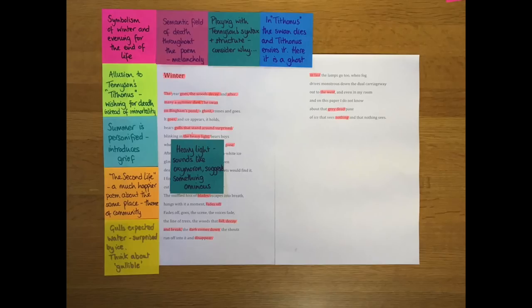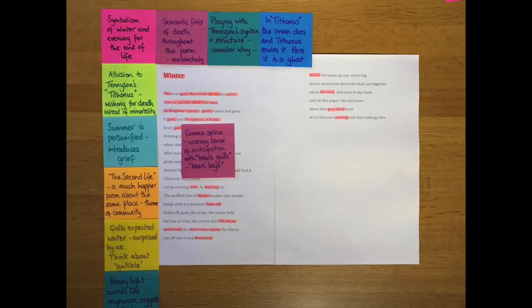The gulls stand around surprised, blinking in the heavy light. Heavy light sounds like an oxymoron, because if we use light as an adjective, it's the opposite of heavy. But even the idea that winter light is oppressive makes it sound like something ominous. It comes and goes, and ice appears, it holds.